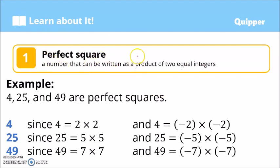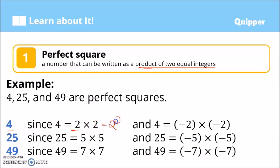A perfect square is a number that can be written as a product of two equal numbers. Examples: 4, 25, and 49 are perfect squares. 4 is a perfect square because we have the integer 2 — when we multiply it to itself, 2 times 2, that becomes 4, or 2 squared. Also, negative 2 times negative 2 is also 4, written as negative 2 squared.